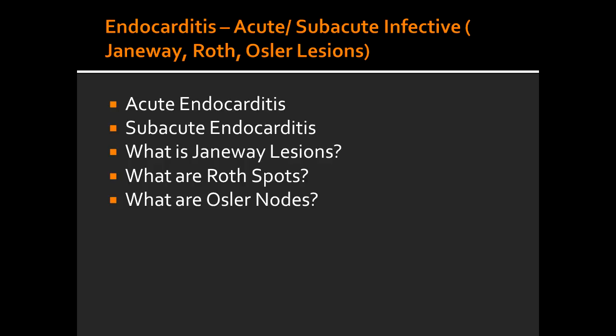What are some characteristic lesions seen in acute infective endocarditis? Acute infective endocarditis includes Janeway lesions. Janeway lesions are non-tender macular patches on the palms and soles.